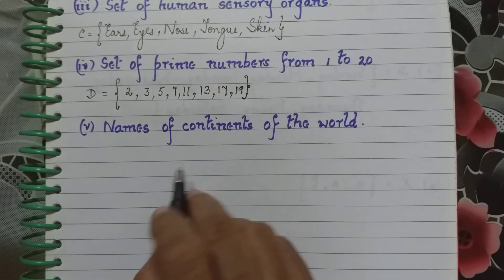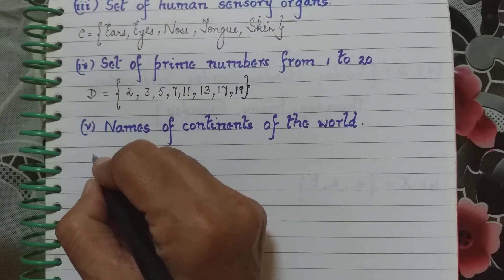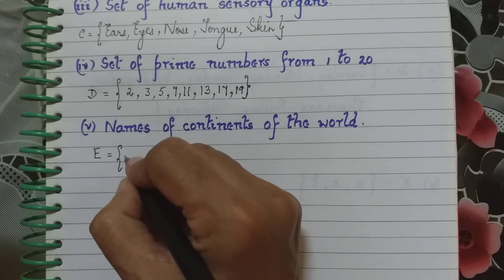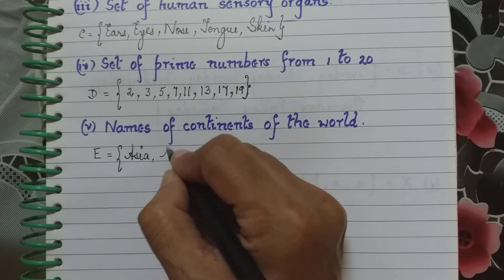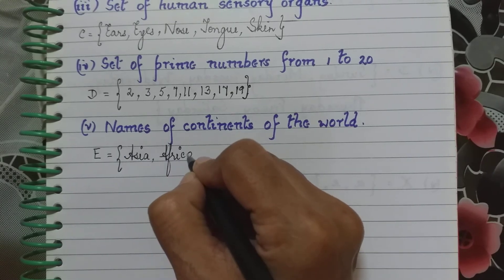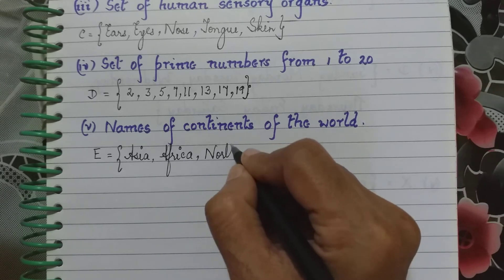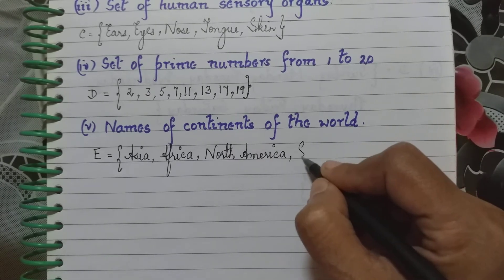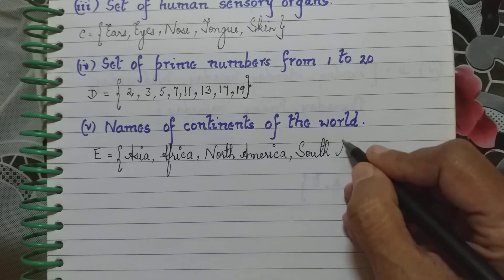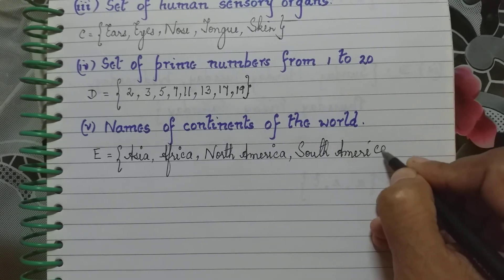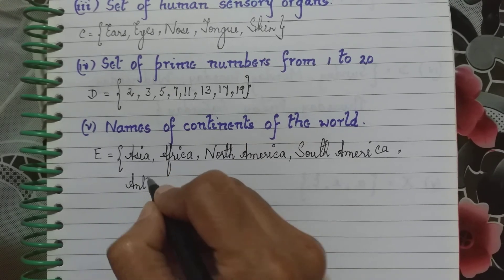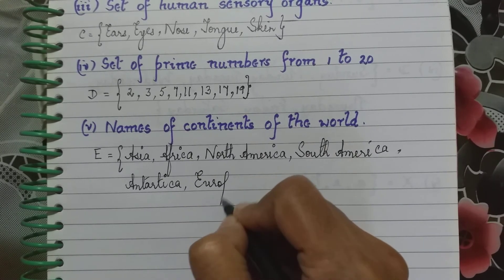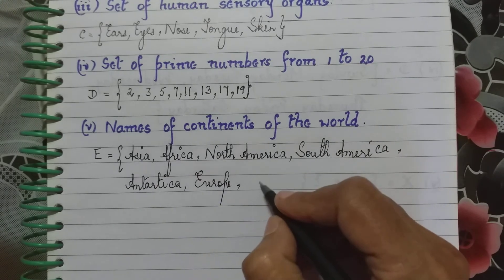Coming to the last one here, the names of the continents of the world. We start with the naming the set which is E, and here we have the elements Asia, then Africa, then North America, South America, next we have Antarctica, then Europe and lastly Australia.